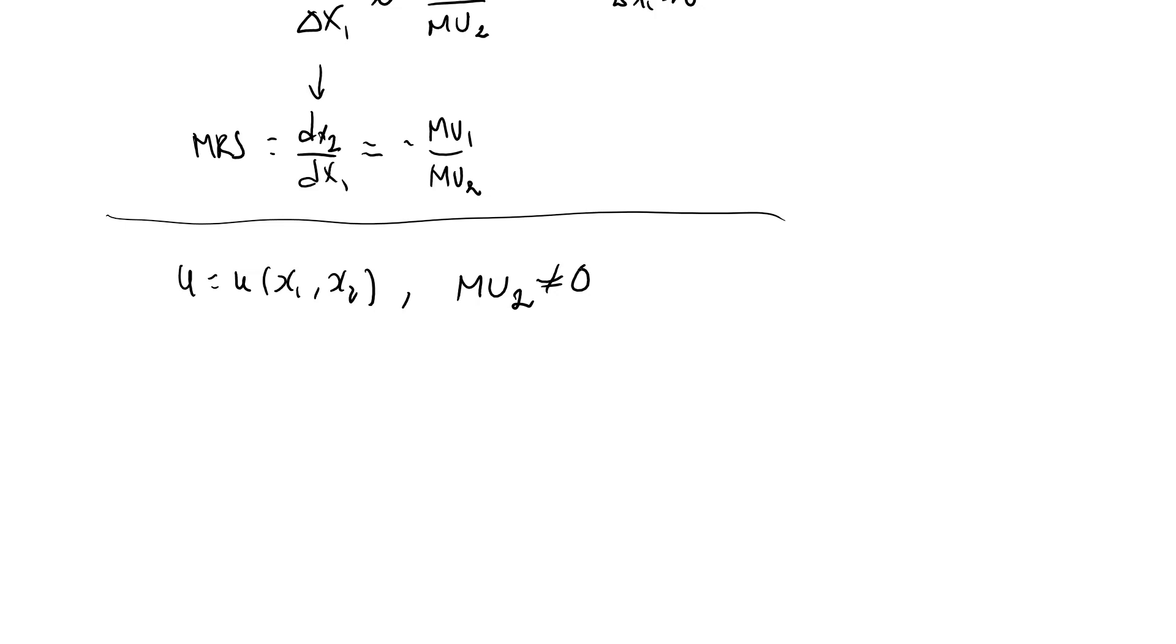I also need to impose this assumption that my marginal utility of good two is not equal to zero at the particular consumption bundle that we're looking at. If the partial derivative of u with respect to x2 is not zero, then it follows from the implicit function theorem that we can write x2 as a function of x1,